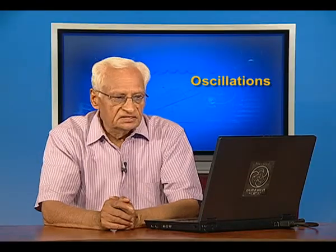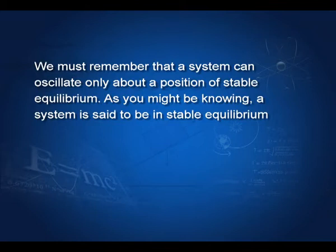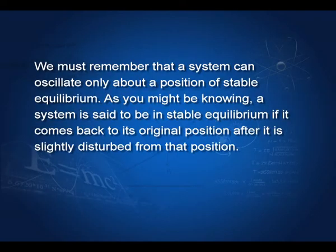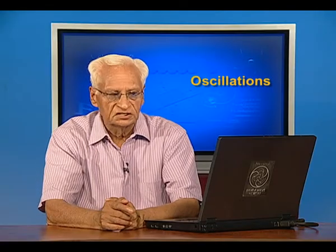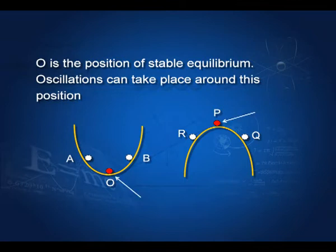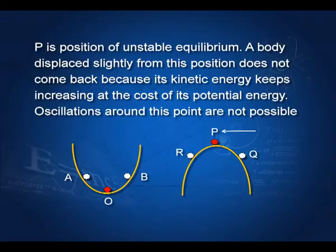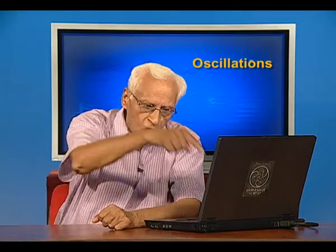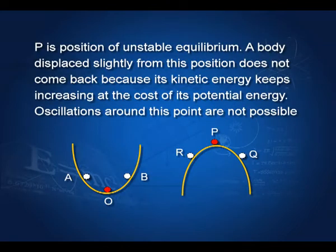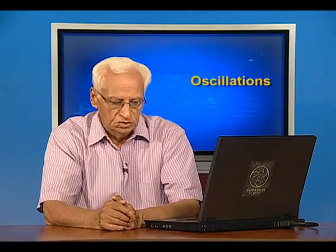An important thing to remember is that a system can oscillate only about a position of stable equilibrium. A system is said to be in stable equilibrium if it comes back to its original position after being slightly disturbed — this is the position of minimum potential energy. In contrast, point P is a position of unstable equilibrium; if disturbed slightly, the ball gains kinetic energy at the cost of potential energy and no oscillations are possible.